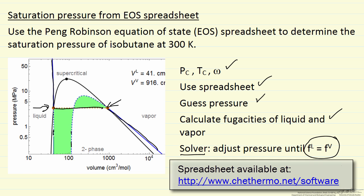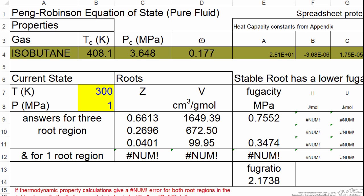So what I'm going to do now is open the spreadsheet. This is a spreadsheet from the Elliott and Lira thermodynamics textbook. So here's the equation of state spreadsheet. And I'm only focusing on part of the spreadsheet. So I've actually made those cells larger and the other cells smaller.